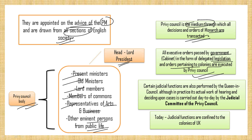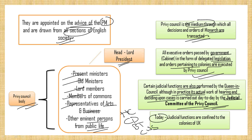Certain judicial functions are also performed by the Queen in Council, although in practice the actual work of hearing and deciding upon cases is carried out day to day by the Judicial Committee of the Privy Council. The Privy Council formally acted as the high court of appeal for the entire British Empire and continues to hear appeals from the Crown dependencies, some British overseas territories, some independent Commonwealth states, and today judicial functions are confined to the colonies of the UK.